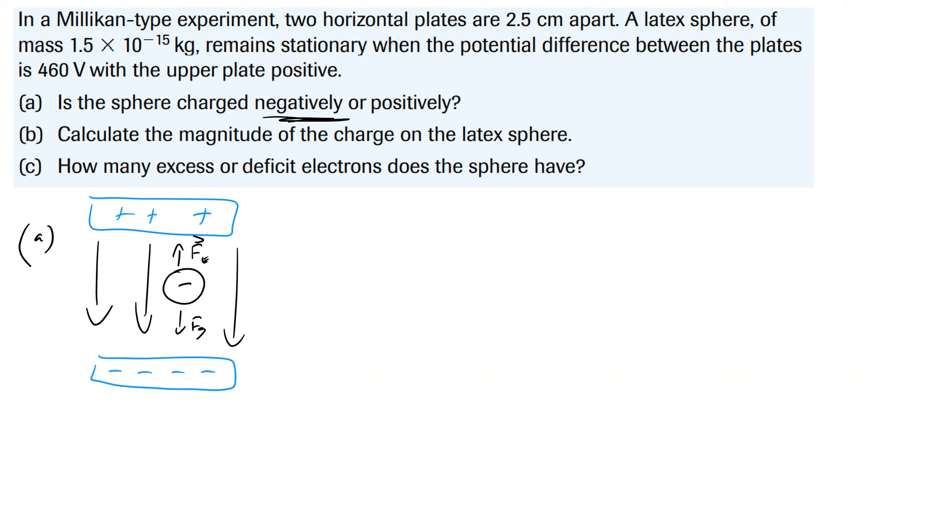Now how do we quantify this? Well we know in this particular case that the force of the electron is equal to force gravity, which means q times the electric field is equal to mg. We also know that the electric field is delta V over r. Now what we're asking for is we're asking for charge. So I'm going to rearrange this equation. So q is equal to mgr over delta V.